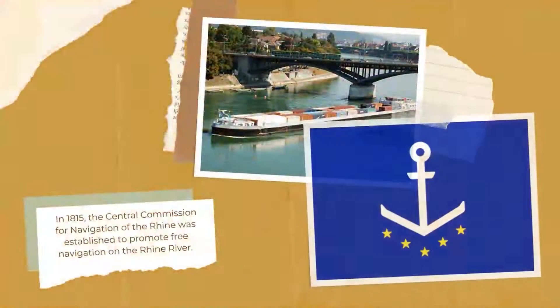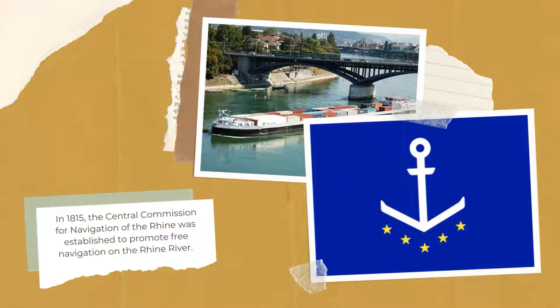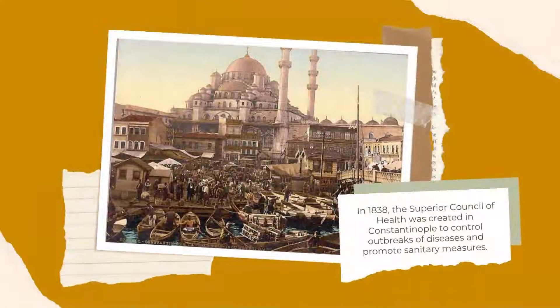In 1815, the Central Commission for Navigation of the Rhine was established to promote free navigation on the Rhine River. In 1838, the Superior Council of Health was created in Constantinople to control outbreaks of diseases and promote sanitary measures.